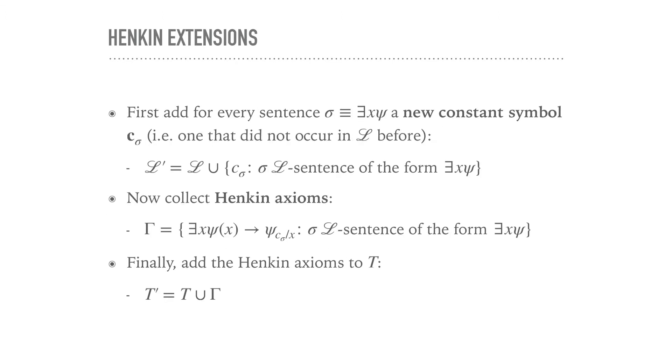So what would such an extension look like? Well, the first thing, if we just want to try and do it very naively, we could just add for every sentence, existential sentence of this form, a new constant symbol. We just throw this into a language. We extend our language first. We add a new constant symbol c_σ, and it has to be new, so it did not occur in L before. So we take L, and then we add the new constant symbols, each one symbol for each sentence of this form.